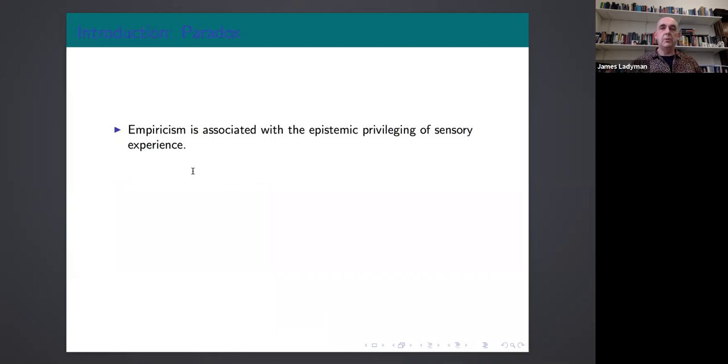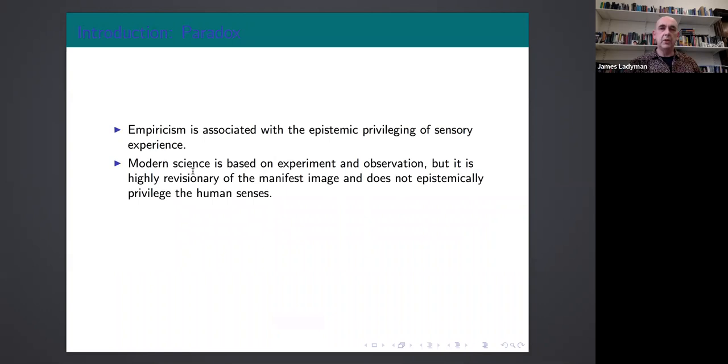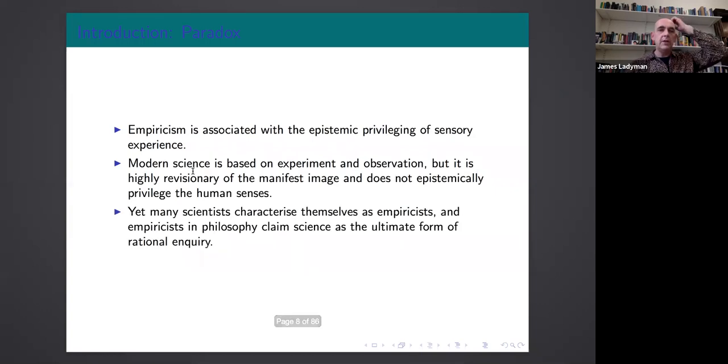Okay good, so I'll start with a paradox. The paradox goes like this: empiricism is associated with the epistemic privileging of sensory experience. Modern science is based on experiment and observation, but it is highly revisionary of the manifest image and does not epistemically privilege the human senses. Yet many scientists characterize themselves as empiricists and empiricists in philosophy claim science is the ultimate form of rational inquiry. So it looks like there's a paradox there, so my talk is going to be an attempt to resolve this paradox.